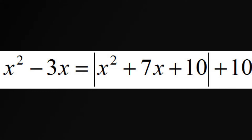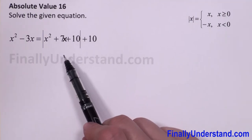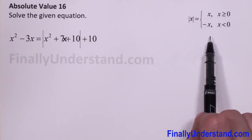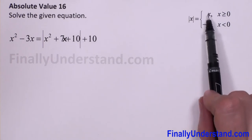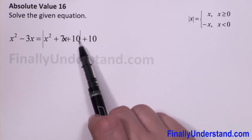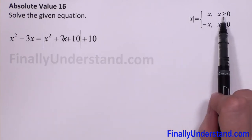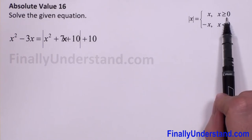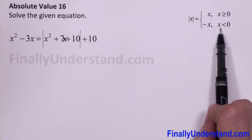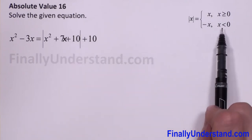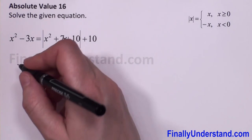Let's see our equation again. We have an absolute value, which means we have to use the definition of absolute value and consider two cases: first, when the value between the absolute value bars is positive or equal to zero, and second, when the value between the absolute value bars is negative.